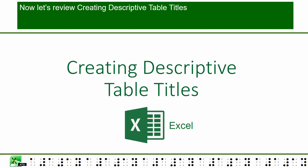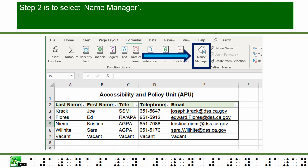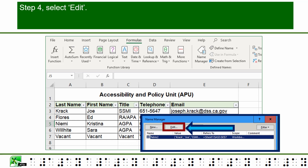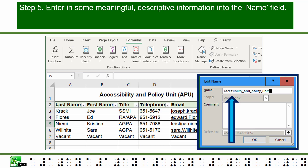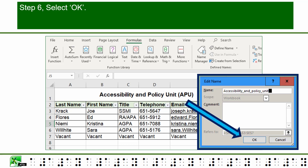Let's review creating descriptive table titles. Step 1: select the Formulas tab. Step 2: select Name Manager. Step 3: select the table you want to edit — it will appear highlighted in dark blue. Step 4: select Edit. Step 5: enter meaningful descriptive information into the Name field. Note that spaces cannot be used, but underscores can separate words for screen reader users. Step 6: select OK.